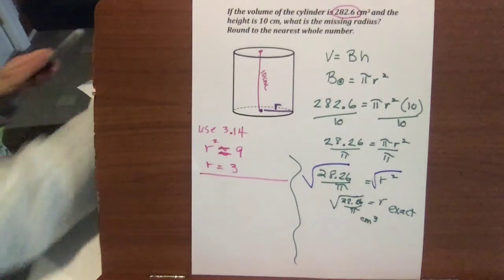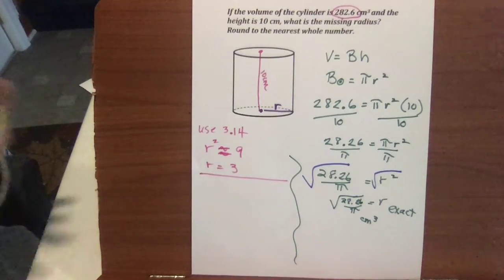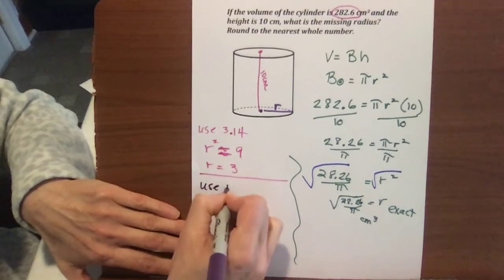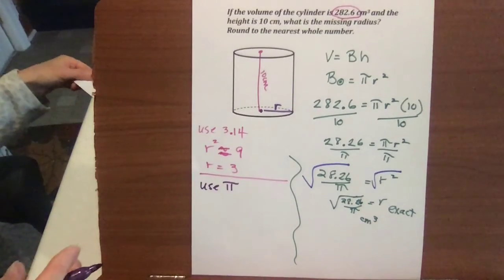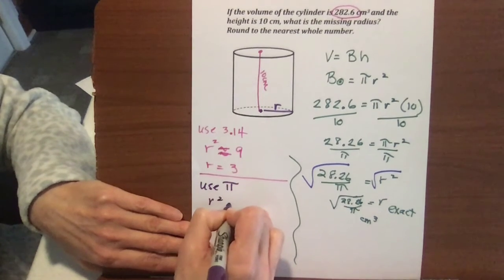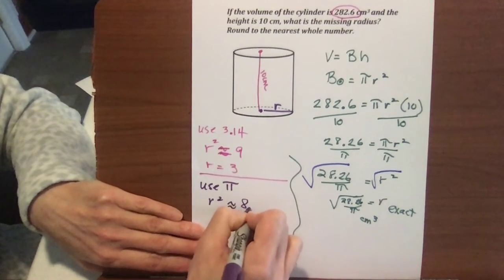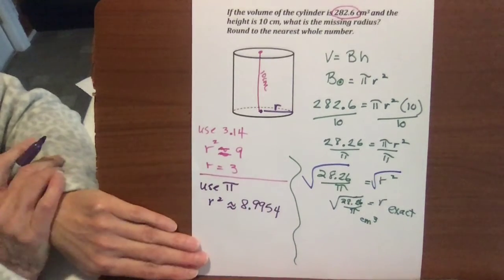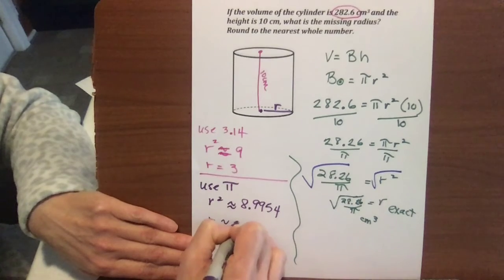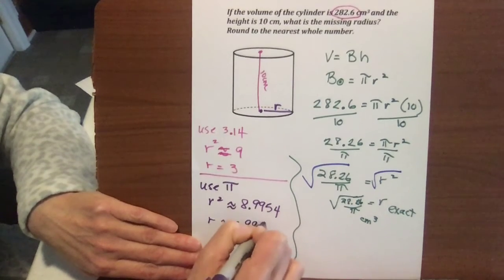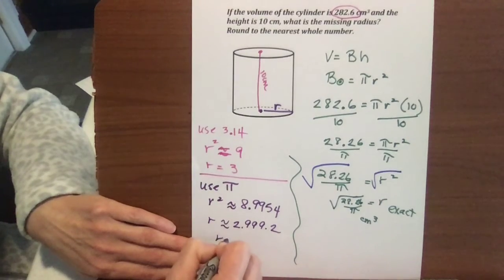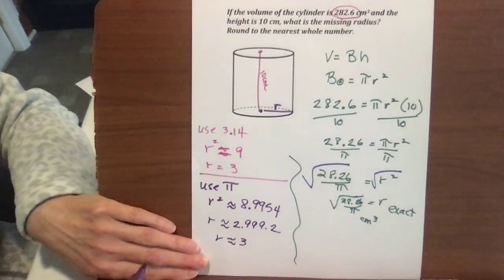If you're going to use pi on the calculator and not round it to anything, if you're just going to use pi, then when you solve, r squared is going to be approximately equal to 8.9954. And when you take the square root, r will approximately be equal to 2.9992, and so that's close enough to 3, so it's approximately equal to 3.